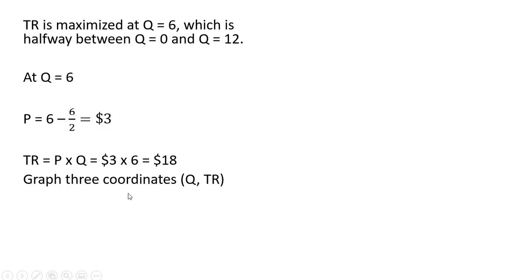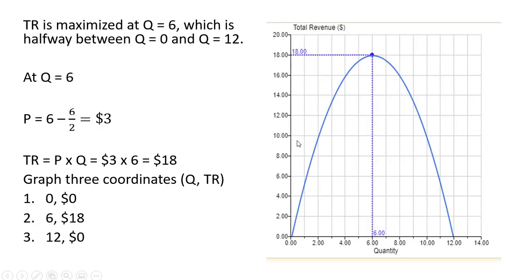Now we can graph the three coordinates: we have (0, 0), (6, 18), and (12, 0). Our graph would look something like this — an inverted U shape. I hope you found this video helpful. Thank you.